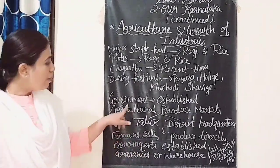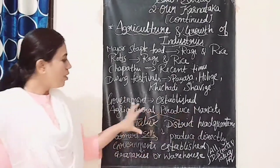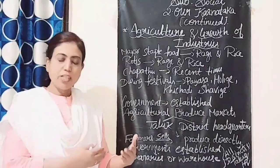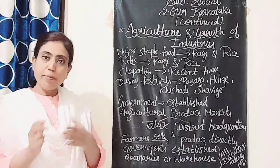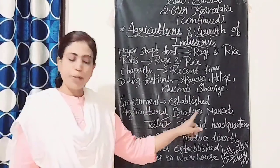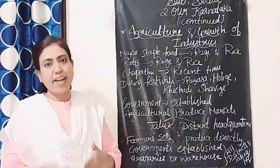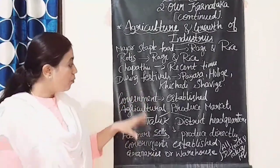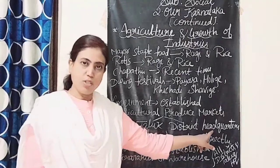The government has established agricultural produce markets. When farmers grow crops and harvest them, they need a place to sell. These markets, established at Taluk and District Headquarters, allow farmers to get a reasonable price for their efforts.